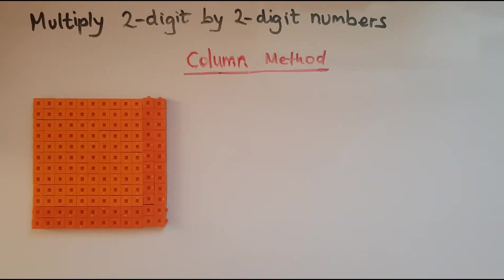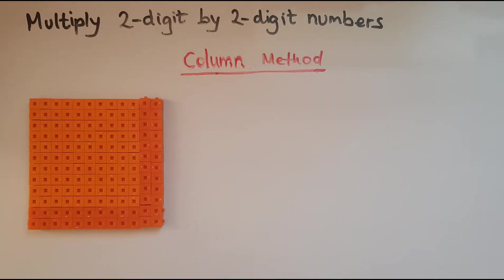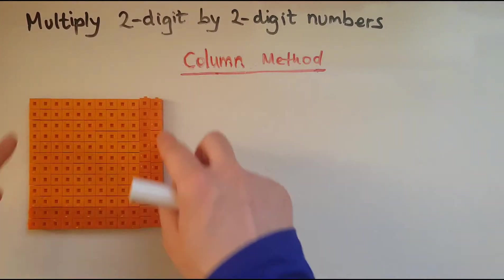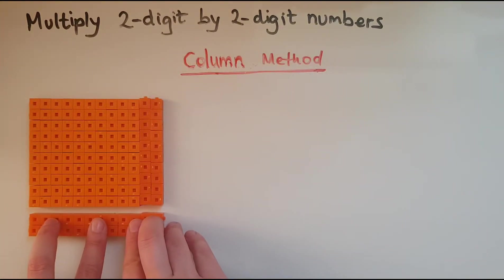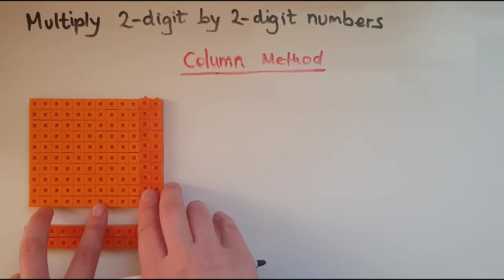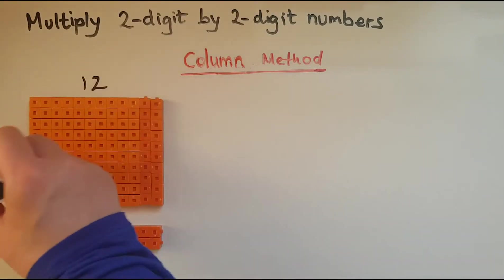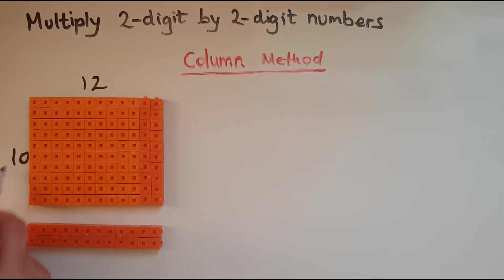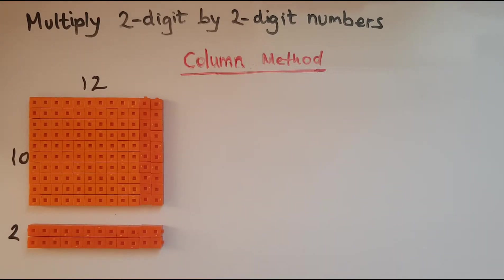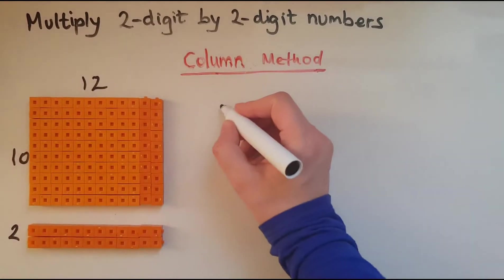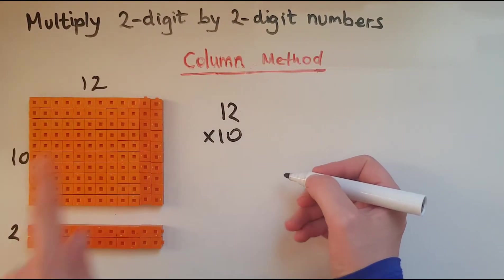We'll now multiply two-digit numbers using the column method. Again, 12 times 12 will be represented in a slightly different way. I'm going to keep this 12 as it is — the rows remain the same — but I'll split the columns into 10 and 2. So this is all together made by multiplying 12 by 10 and multiplying 12 by 2.